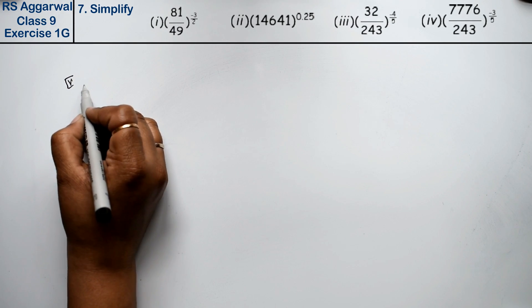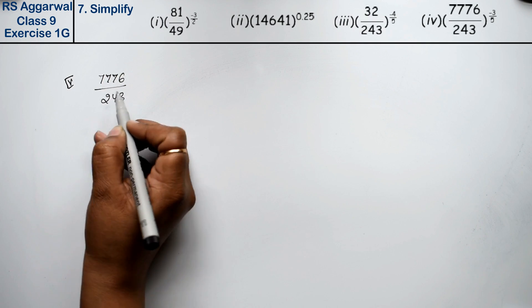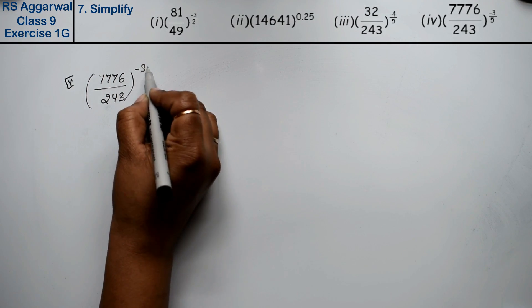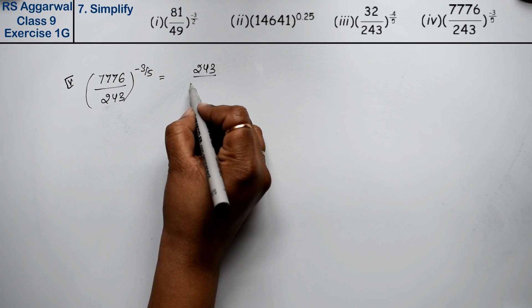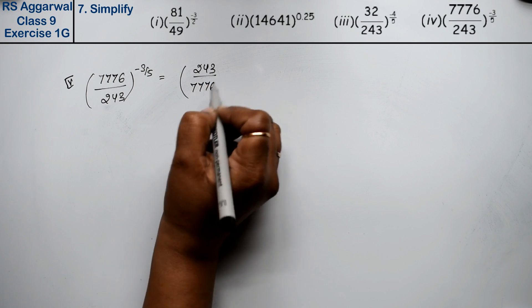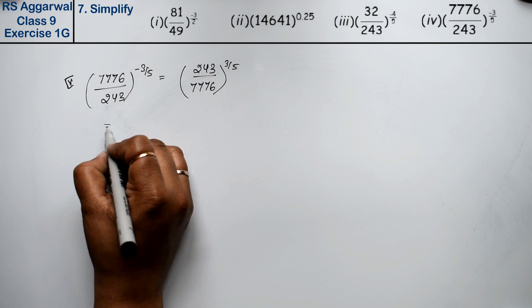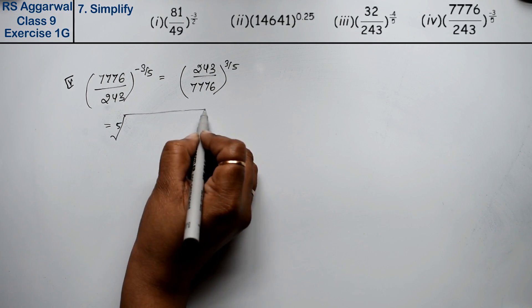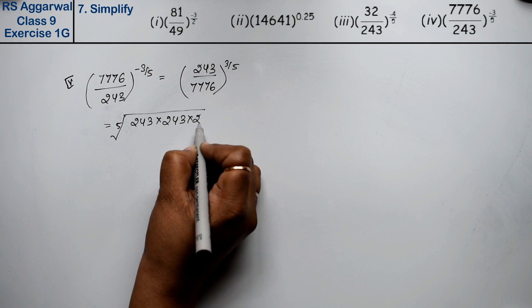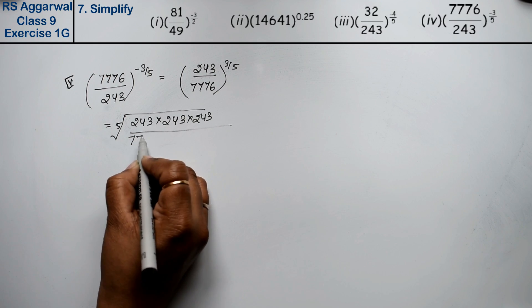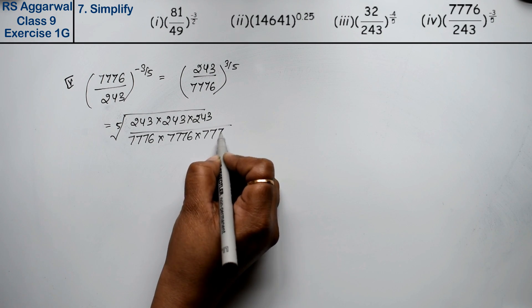4th part is 7776 upon 243 to the power minus 3 upon 5. Since it's negative, we take the reciprocal first: 243 upon 7776 to the power 3 upon 5. The denominator 5 comes out as 5th root and 243 is multiplied 3 times upon 7776 × 7776 × 7776.